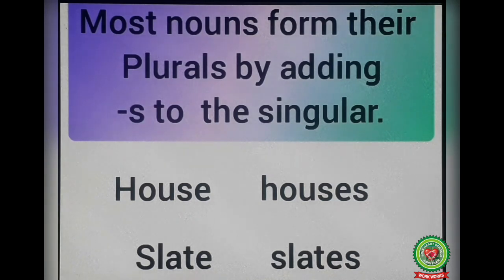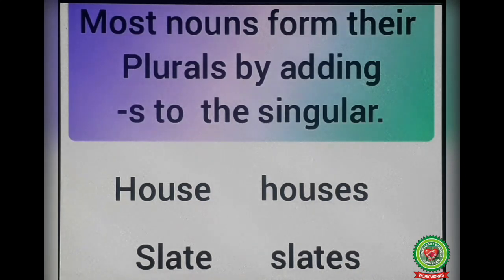The first rule is: most nouns form their plurals by simply adding S to the singular. For example, house becomes houses, slave becomes slaves.